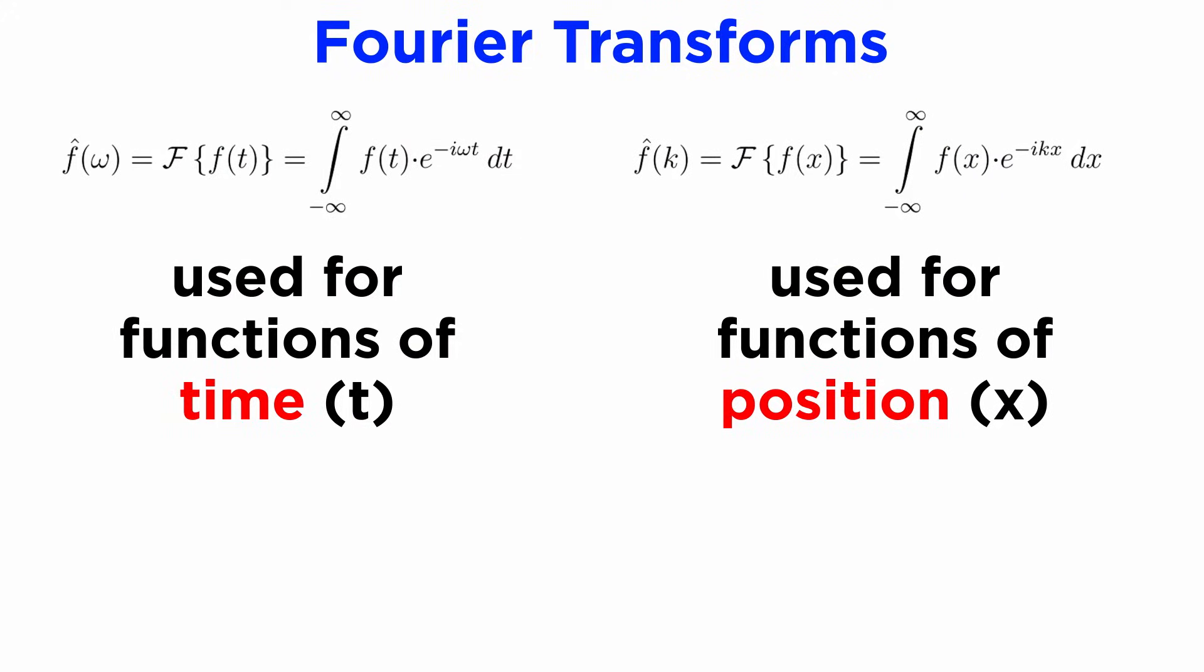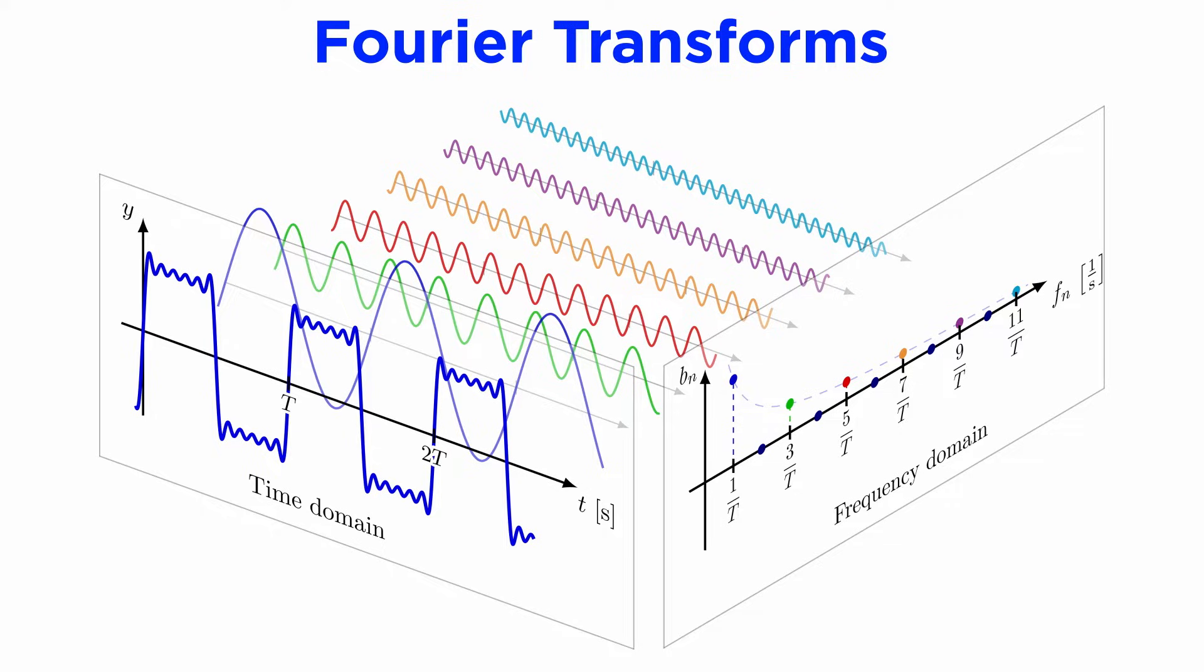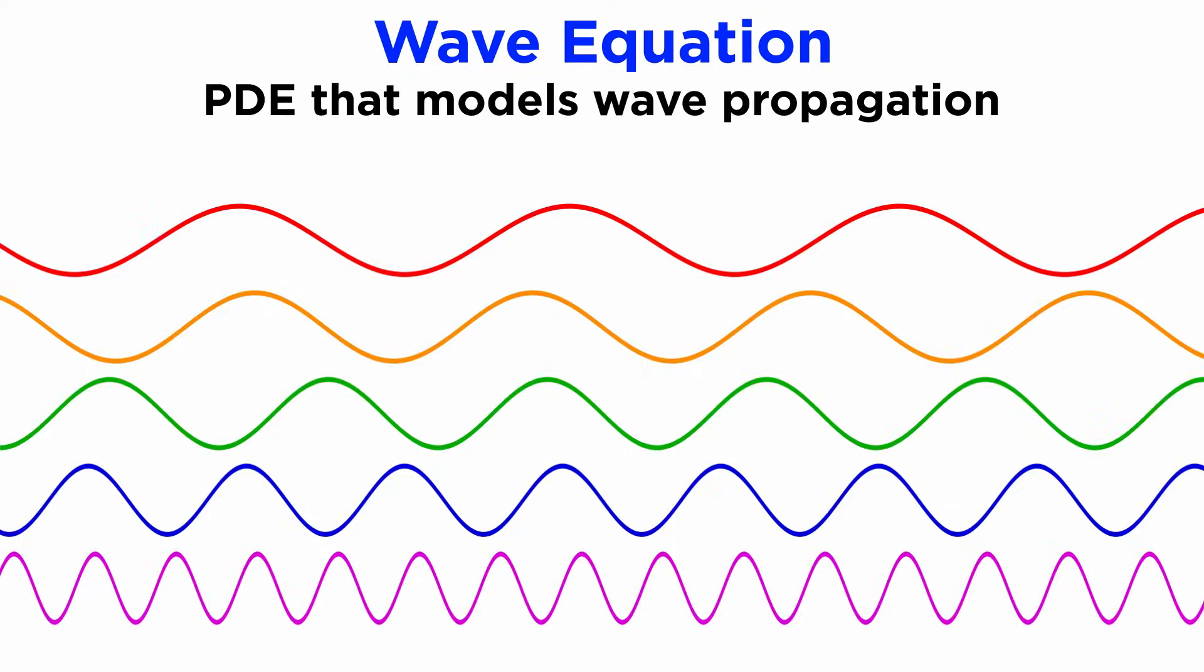In the previous tutorial, we learned about Fourier transforms and how they can be used to identify what frequencies are present in a function, and how they are especially useful for picking out the frequency components of sums of sine waves. We will now study the partial differential equation that models wave propagation, and that is the aptly named wave equation.